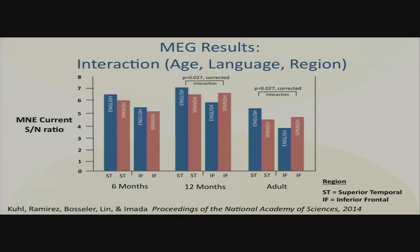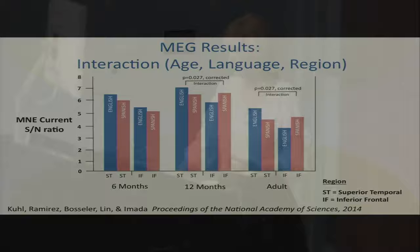We can scan one-month-olds, and we want to look before they've had a lot of schema development in sensory-motor. They're not babbling much. We want to see if we see Broca's activation in one-monthers and what kinds of experience influenced the development of the pattern at 12 months.